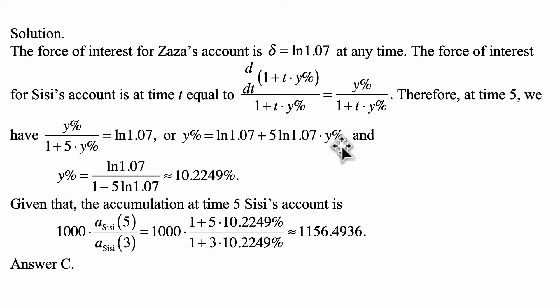The accumulation at time 5 in CC's account is 1,000 times the accumulation function of CC's account at time 5 divided by the accumulation function at time 3, which equals 1,000 times (1 plus 5 times 10.2249%) divided by (1 plus 3 times 10.2249%). That is approximately equal to 1,156.4936, which is answer C.